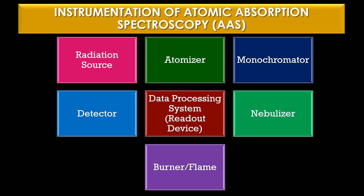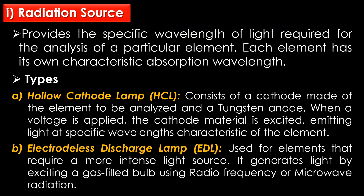The instrumentation of atomic absorption spectroscopy contains seven major parts: radiation source, atomizer, monochromator, detector, data processing system or readout device, nebulizer, and burner or flame. The first part is the radiation source, which provides the specific wavelength of light required for analysis of a particular element. Each element has its own characteristic absorption wavelength. There are two types of radiation source: the hollow cathode lamp and the electrodeless discharge lamp.